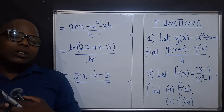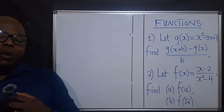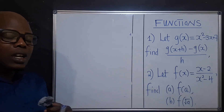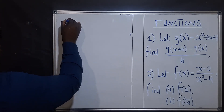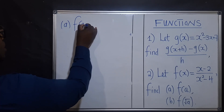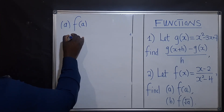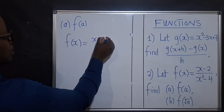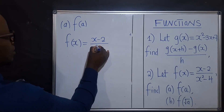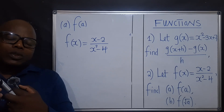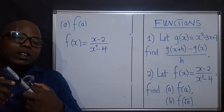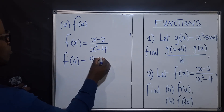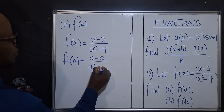Let's check out question number 2. So for question number 2, they have given us a function and we need to find f of a. So for f of a, we get the given function and substitute. f of a is equal to a minus 2 over a power 2 minus 4.